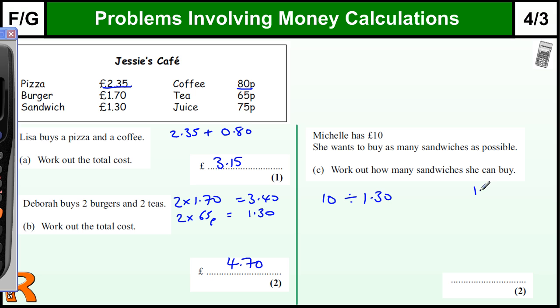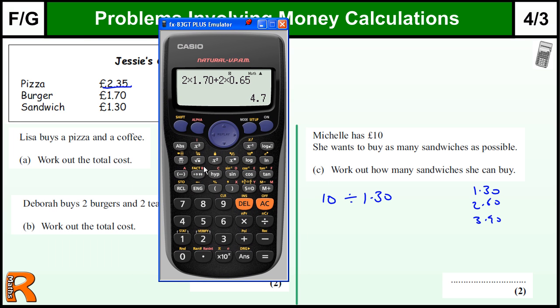Alternatively you could be adding up £1.30, £2.60, £3.90 - just keep going up to you get to 10 if you're not too keen on division. So 10 divided by 1.30 or £1.30.